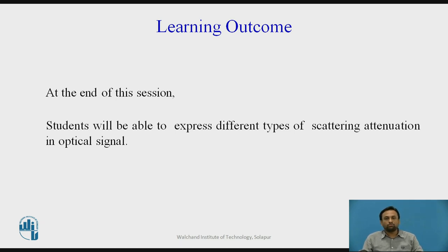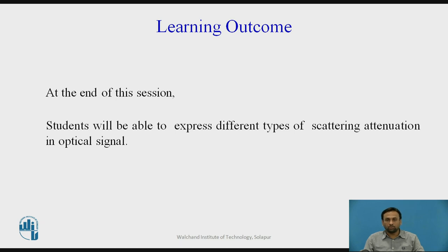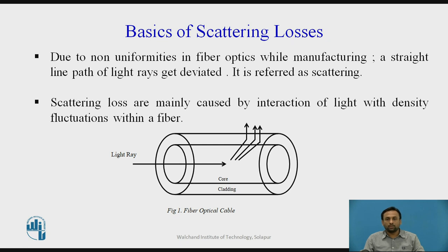In the previous lecture, we covered the types of attenuation in optical cable when data is being transferred from transmitter to receiver. We saw that material absorptions are due to intrinsic and extrinsic conditions, that scattering is a problem, and that there are also issues with dispersion and microbending losses. Recall that attenuation decreases as wavelength increases.